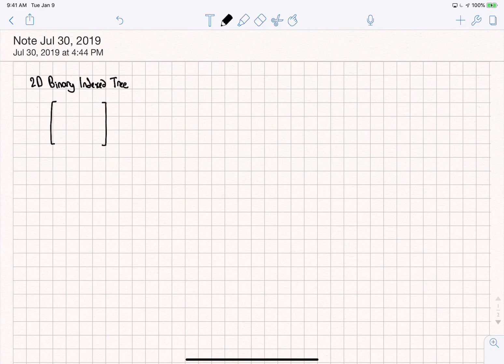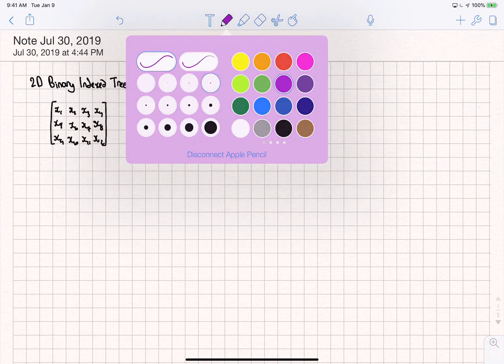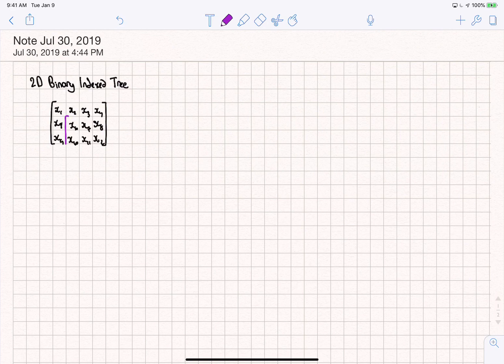So consider this 4 by 3 array. We have different elements here: x1, x2, x3, x4, x5, x6, x7, like this. And we want to do a summation from any particular block. Let's say we want this block from here. We're going to denote each of these points as the origin A, B, C, D.